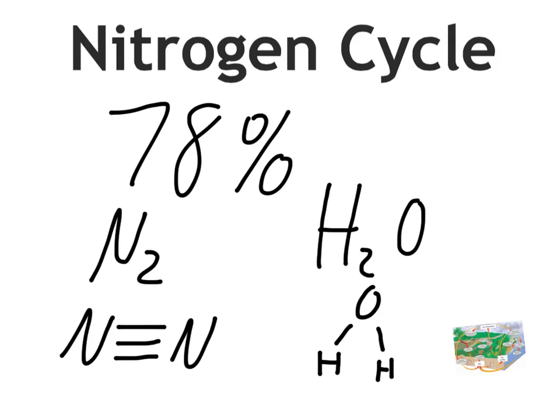So even though there's nitrogen all around us — 78% of the air that you're breathing is nitrogen — we can't actually get any nitrogen out of the air because it's such a stable molecule. It's very, very hard to break this down. It takes an immense amount of energy to break those three bonds. Now there are some instances where this happens, which we'll talk about when we look at the nitrogen cycle diagram.